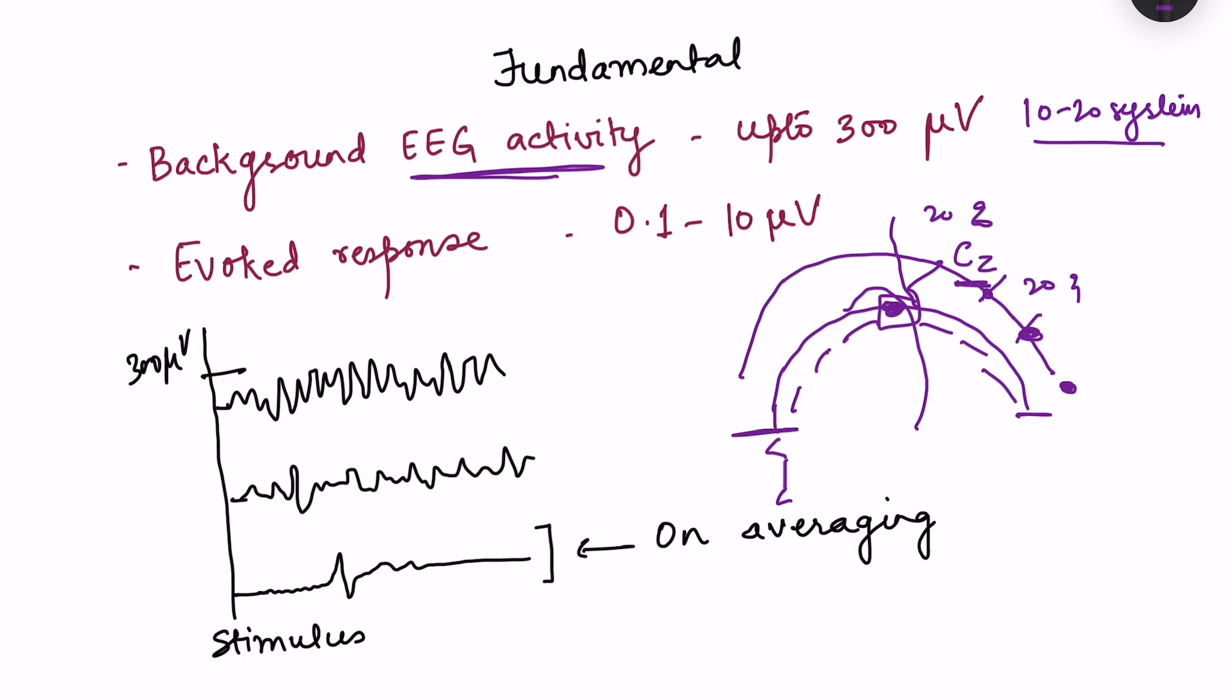When we are recording evoked response, we provide a stimulus to the person and then there is evoked response. Now the problem is that the background EEG activity is up to 300 microvolt in amplitude. However, evoked response is very small, it is only 0.1 to 10 microvolts. That means that if this is the routine EEG activity from the brain being recorded, then even if you are giving the stimulus, evoked response will somewhere be in between and we will not be able to identify which is the evoked response.